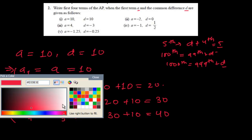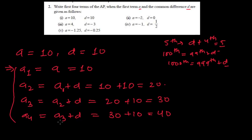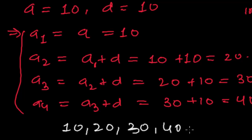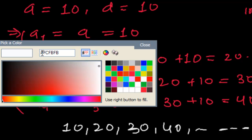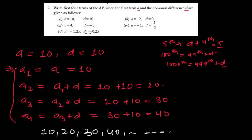So our arithmetic progression now is: A1 is 10, 20, 30, and 40, and so on. This is our required arithmetic progression. Now let me do another one — we finished the first one. I am doing now the second one with a different color.